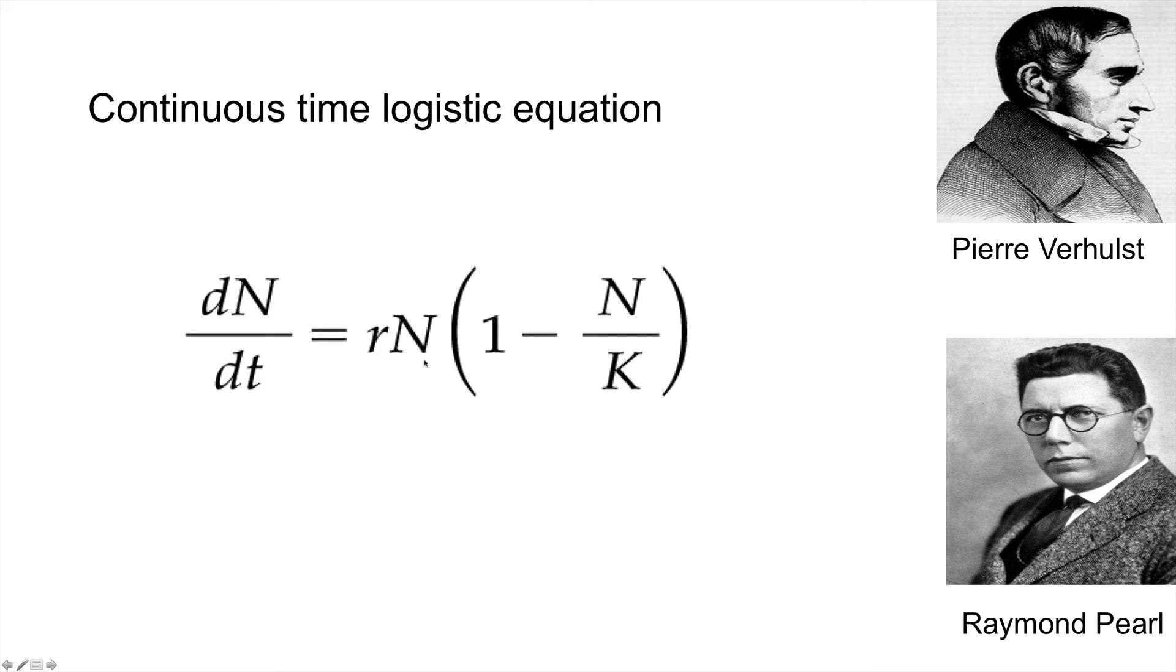And yet it's multiplied here by 1 minus N divided by K. K is often referred to as a carrying capacity.